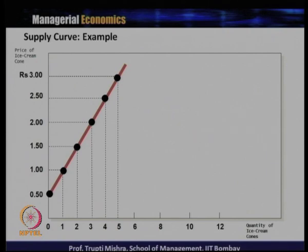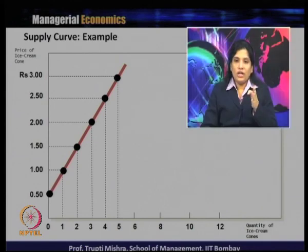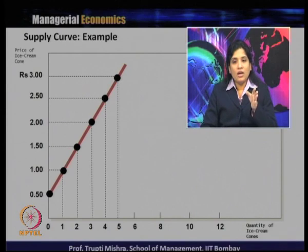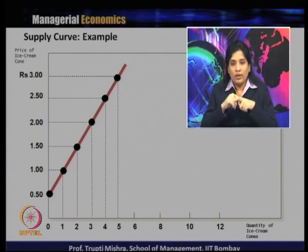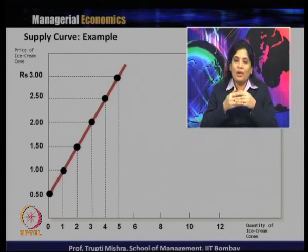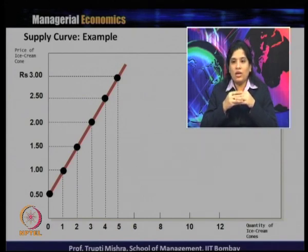If the price is 0, quantity is 0. If the price is 0.5, quantity is 0.5. Each point, each bullet point on the curve shows a price and quantity supplied combination. Since price and quantity supplied are positively related, the supply curve is always upward sloping. More is the price, more is the quantity supplied. Less is the price, less is the quantity supplied.